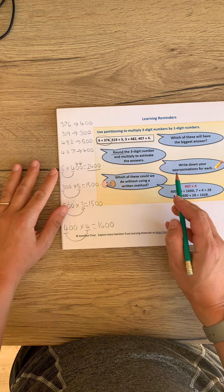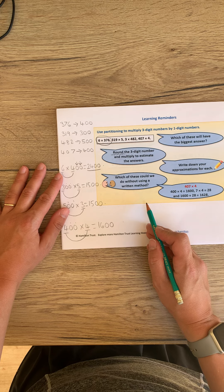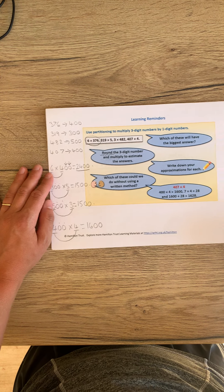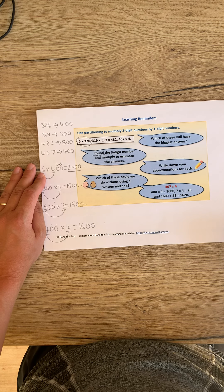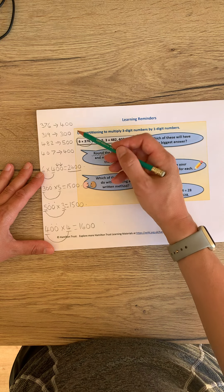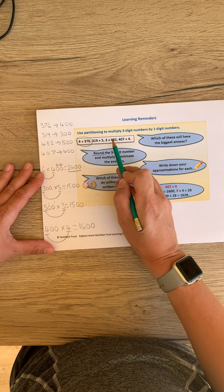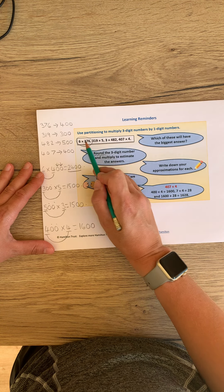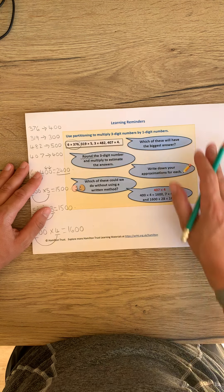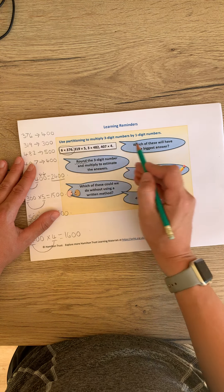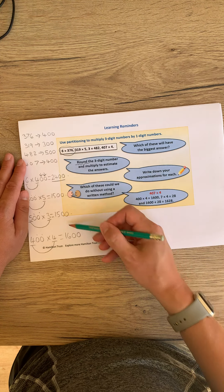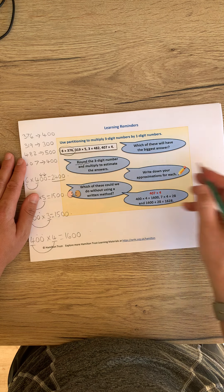Which of these could you do without using a written method? Some of you might feel confident in not using a written method for these, but I would recommend at this stage to do so. So have a go at working out the actual answers to all of these using the grid method. I'm going to do the first one, and I'm going to show you the other three. I would like you to have a go at home.